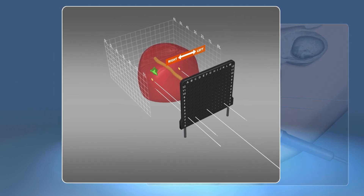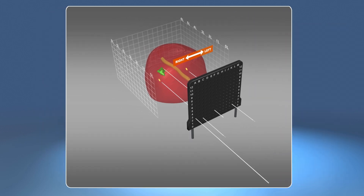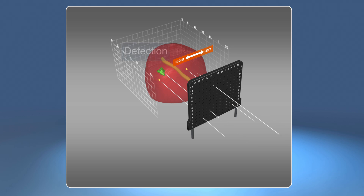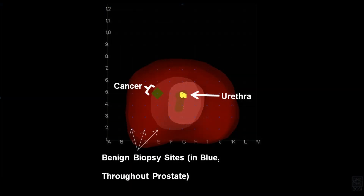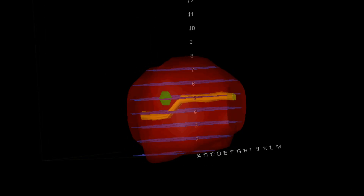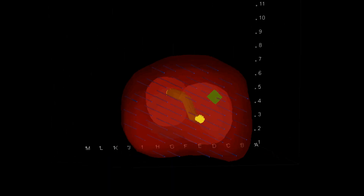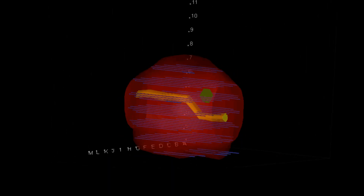Next, the procedure begins and biopsies are taken systematically so that the entire prostate is sampled, ensuring that no areas go unaccounted for. These specific grid locations are noted during the procedure for each biopsy core, which allows us to input the final pathology results into the three-dimensional model.